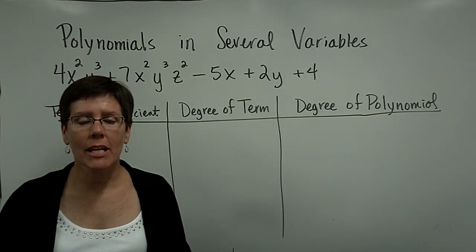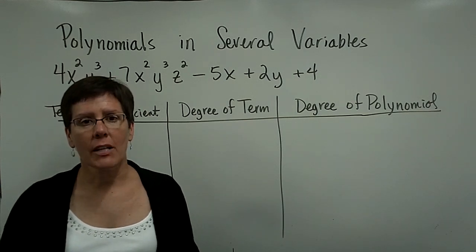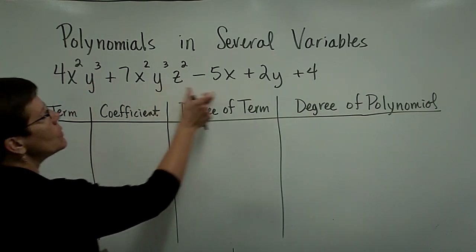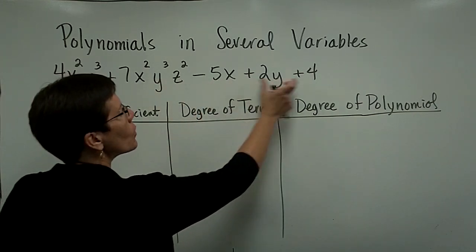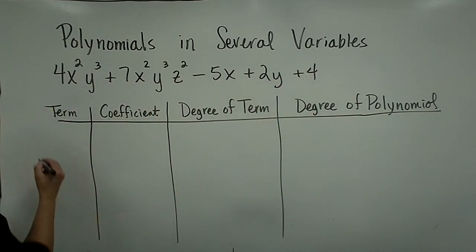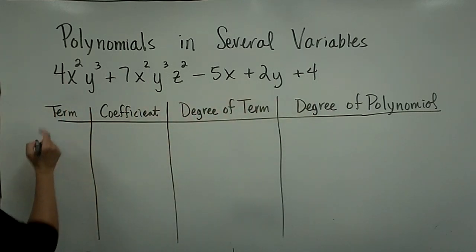I thought we'd slip a segment in here involving polynomials in several variables. What I've got on the board here is a polynomial that has one, two, three, four, five terms. And I'd like to describe in those five terms the coefficient of the term, the degree of the term, and the degree of the polynomial.